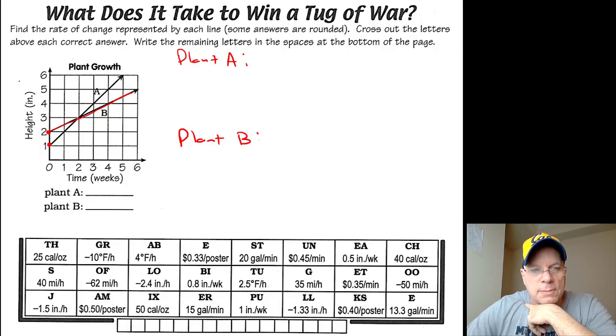But over a certain number of weeks, at some point, actually after exactly two weeks, they're the same height, which means that plant A is growing faster. It has a larger rate of change.